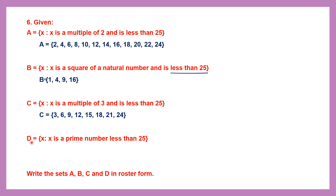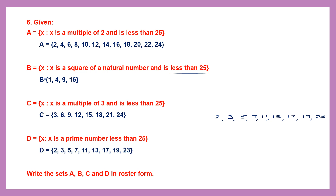Set D: x is a prime number and less than 25. The prime numbers less than 25 are: 2, 3, 5, 7, 11, 13, 17, 19 and 23. So D = {2, 3, 5, 7, 11, 13, 17, 19, 23}. With this, children, we come to the end of this exercise. Thank you.